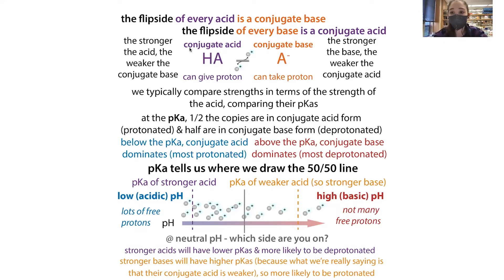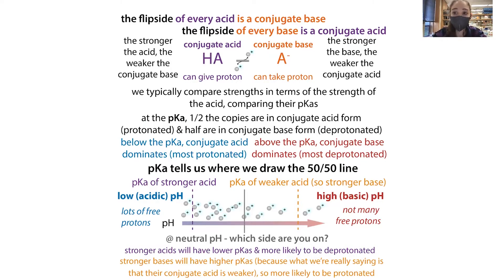By talking in terms of acid strength, we can also talk about base strength. We compare using the pKa value, which is expressed in terms of the acid or conjugate acid strength. A lower pKa means a stronger acid and therefore a weaker conjugate base. So if we want to see whether something is a better base, we would want something with a higher pKa, because a higher pKa means it's a weaker acid and therefore a stronger conjugate base.